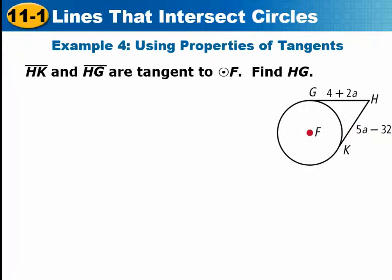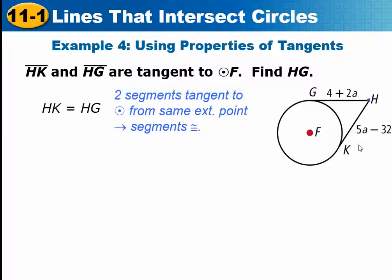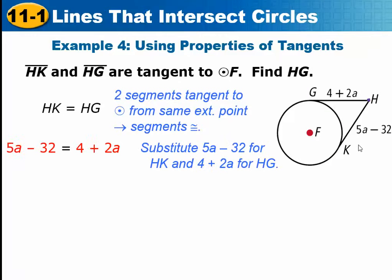In this one they want us to find HG, which is this length. Well, because they're both tangent to the circle and from the same external point, we can write that 4 plus 2A equals 5A minus 32. And then we just solve for A. So in this case, they subtracted 2A first.